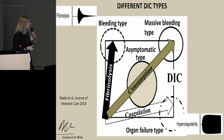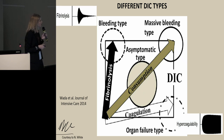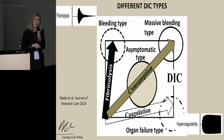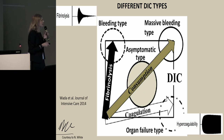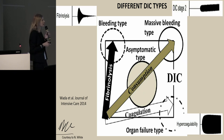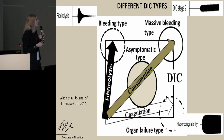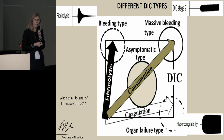Hypercoagulability is what you see on a TEG or ROTEM in that scenario. If we have both vectors very large — both coagulation and fibrinolysis — then we will have massive consumption of all coagulation factors and platelets, and the patients will have massive bleeding. This is something we see after major surgery, after trauma, or after major obstetric bleeding.